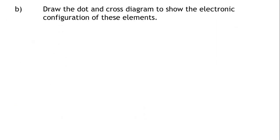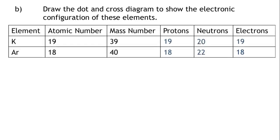Part B: Draw the dot and cross diagram to show the electronic configuration of these elements. So what do we know? The first shell in an atom can hold a maximum of 2 electrons, and the next shells can hold a maximum of 8 electrons.